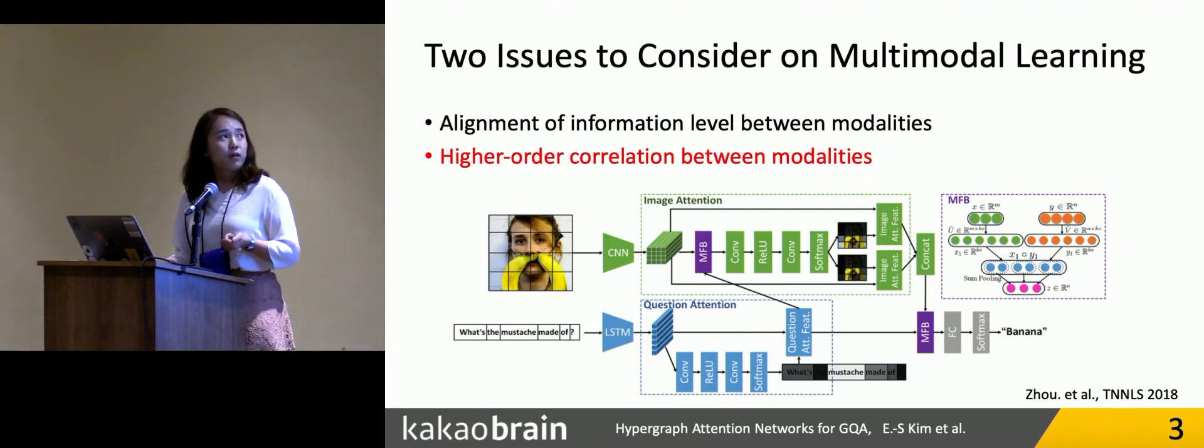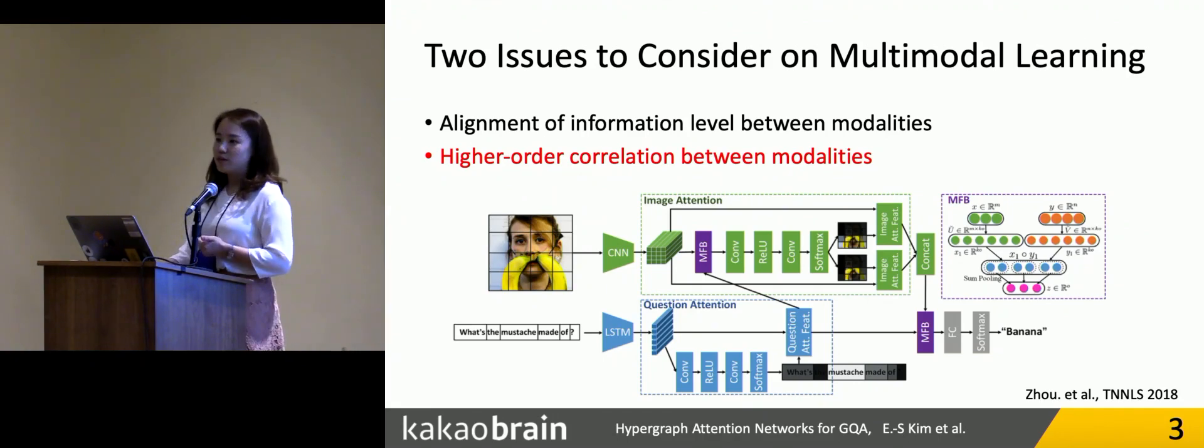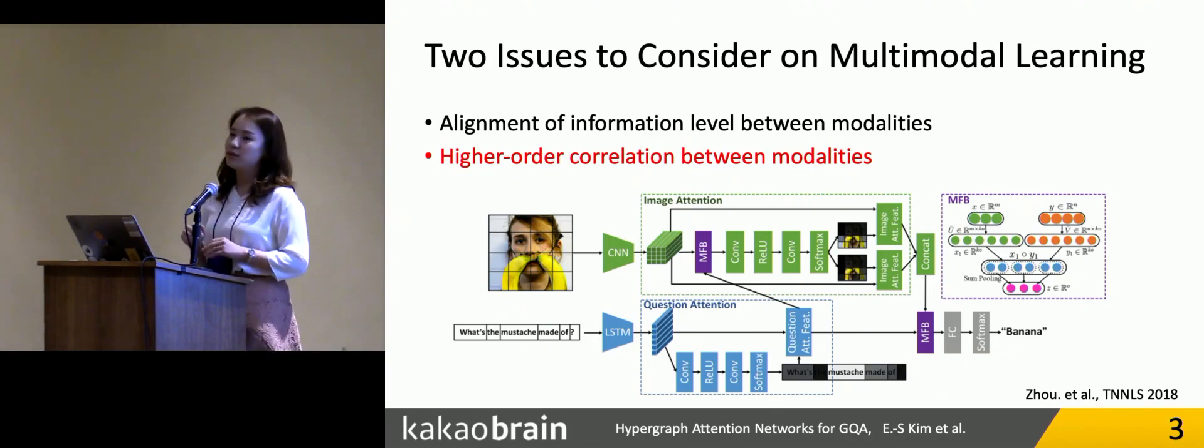The second problem is we want to consider the high-order correlation between modalities. Conventional attention methods for multimodal learning typically try to model the element-wise interaction between just two feature vectors. Or recently, some works like MFB by Zoe or Bilinear Attention Networks by Kim et al. try to model the high-level interactions such as objects in images and words in question sentences.